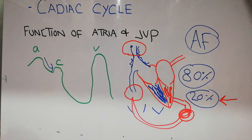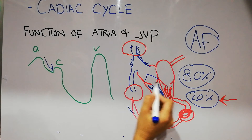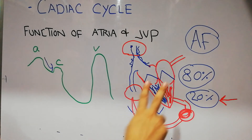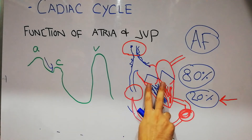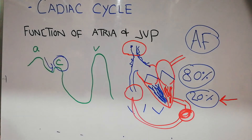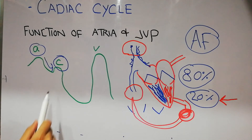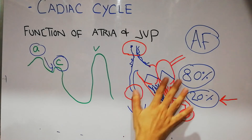Now the ventricles will contract — systole will occur. As soon as ventricular contraction occurs, the atrioventricular valves close and move upward. Due to this upward movement and bulging of the atrioventricular valves caused by ventricular contraction, another wave is recorded in the jugular vein — that is known as the C wave. So the A wave is for atrial contraction, and the C wave is due to the bulge of the valves at the start of ventricular contraction.